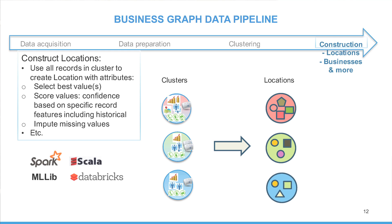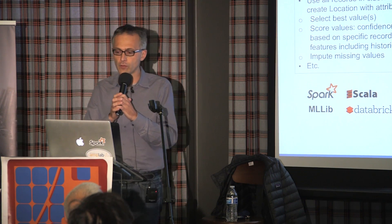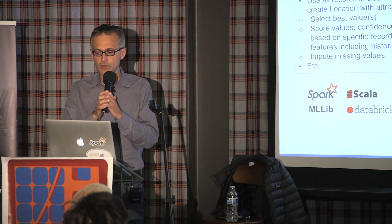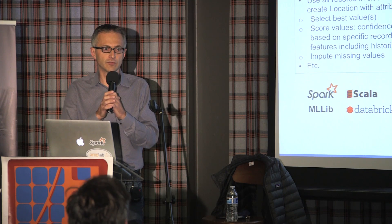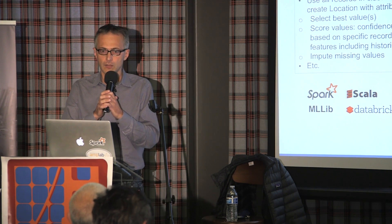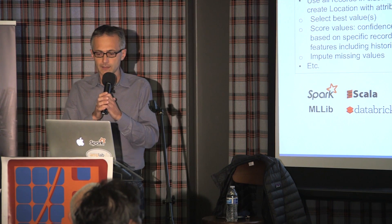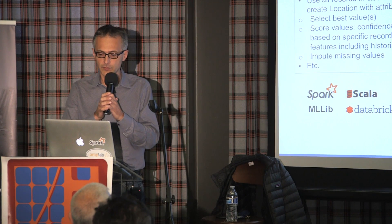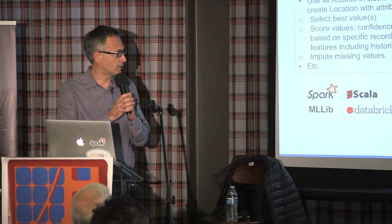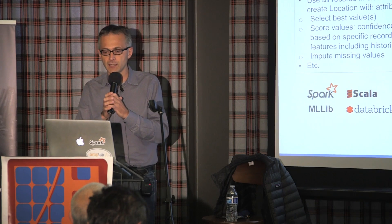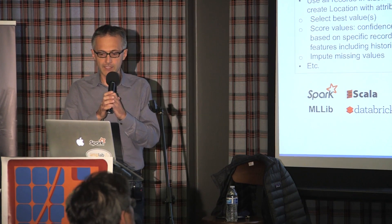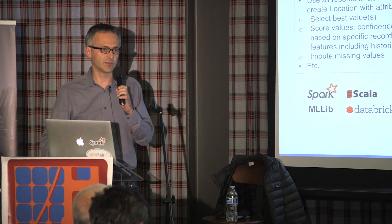The last step breaks into two sub-steps. First, we construct the locations. Second, we construct the link between locations and the business. For each cluster, we select the best value or values across all records in the cluster — for instance, selecting the best business name or ranking all phone numbers based on accuracy using a machine learning model that uses data across sources, such as how many sources proposed that phone number or how long that record existed based on historical data. We also impute missing values. We use a variety of supervised machine learning models with MLlib such as Logistic Regression, Random Forest, or GBT. The output is a set of locations — a business at a given address — each represented by a colored disk containing properly defined attributes.